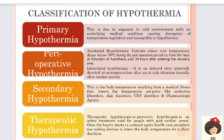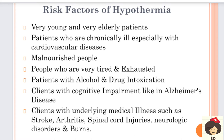If the body temperature reduces due to cooling devices, we call it therapeutic hypothermia. Coming to the risk factors of hypothermia. Hypothermia is more common in very young and very elderly patients. In elderly patients due to nerve degeneration and in young patients due to immature nerves, the hypothalamus is not able to regulate body temperature, making them more prone. When exposed to cold temperature, these persons have a high chance of getting hypothermia.